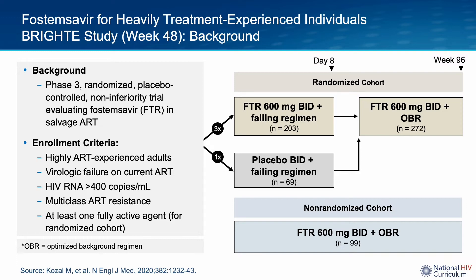Participants entered the non-randomized cohort if they had zero fully active ARV drugs that could be added to Fostemsevir. Individuals in this cohort still received optimized background therapy — meaning the most active combination of additional ARVs possible — but those in the non-randomized cohort generally did not have a fully active drug that could be added to Fostemsevir. Participants in the randomized cohort received either Fostemsevir plus their baseline failing regimen, or placebo plus their baseline failing regimen, for a total of eight days. At that point, viral loads were assessed, and participants in the randomized cohort transitioned to Fostemsevir plus an optimized background regimen.